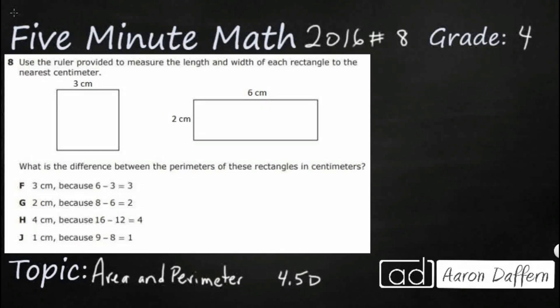Hello and welcome to 5-Minute Math. Today we are looking at the fourth grade concept of area and perimeter. This is standard 4.5D in the great state of Texas and we are using item number 8 off the 2016 released STAR test.